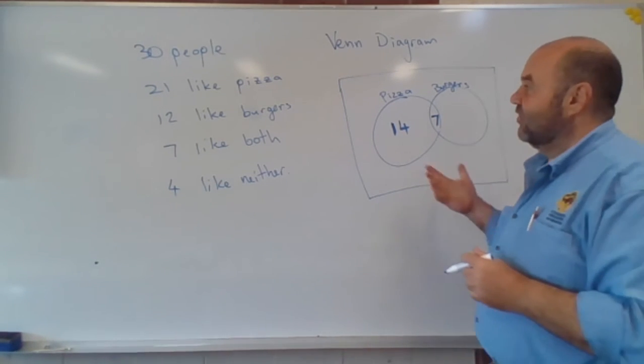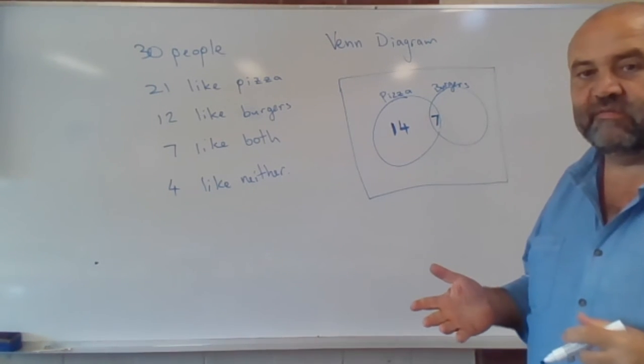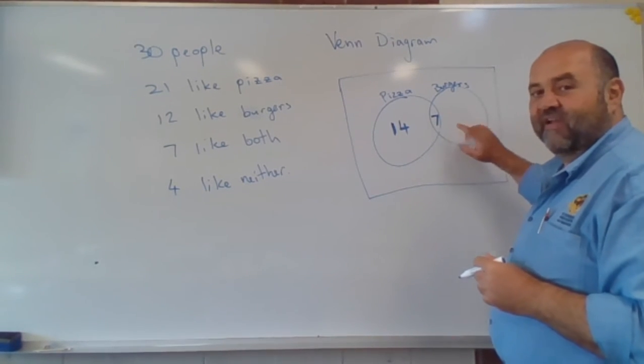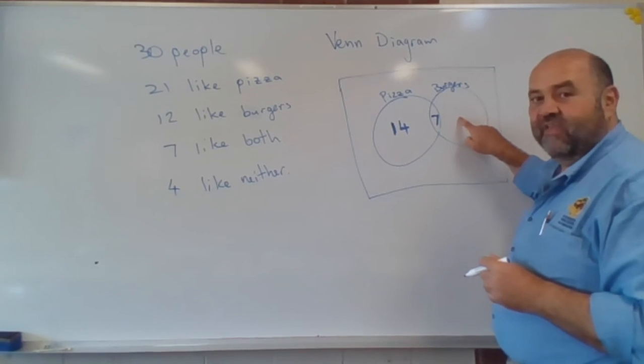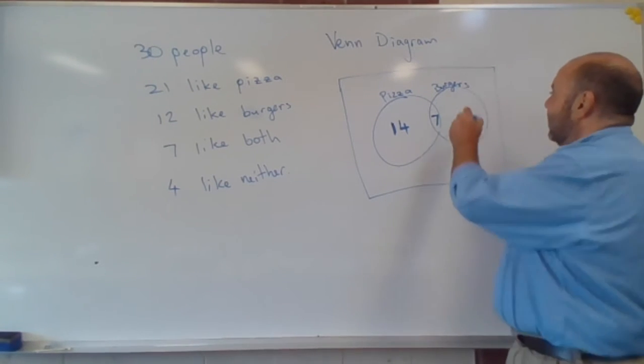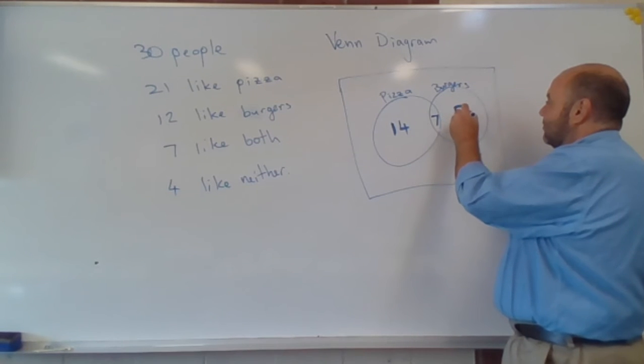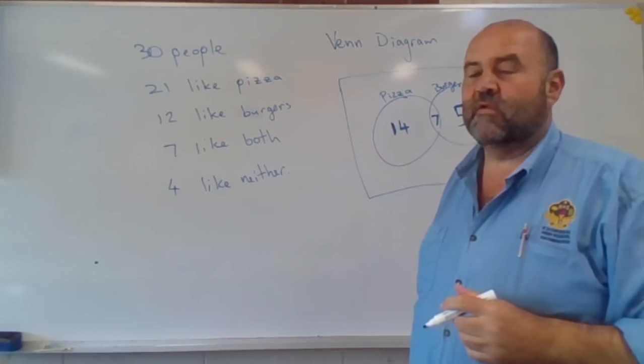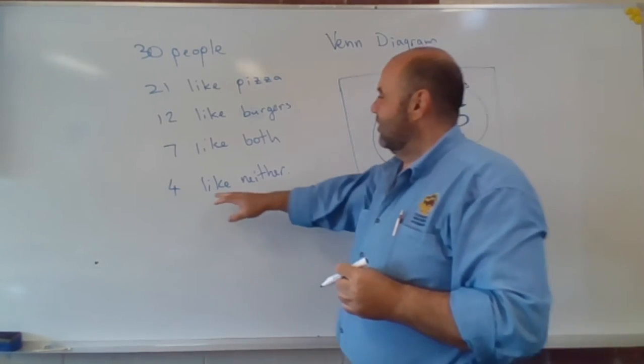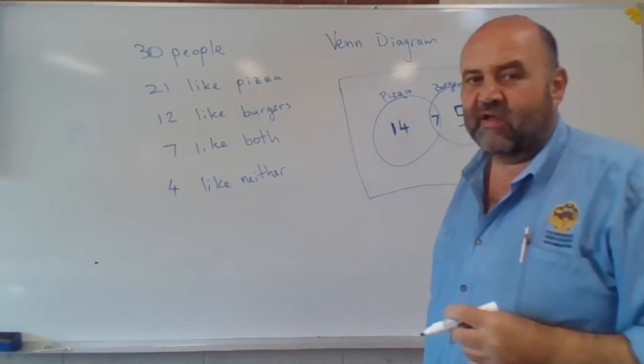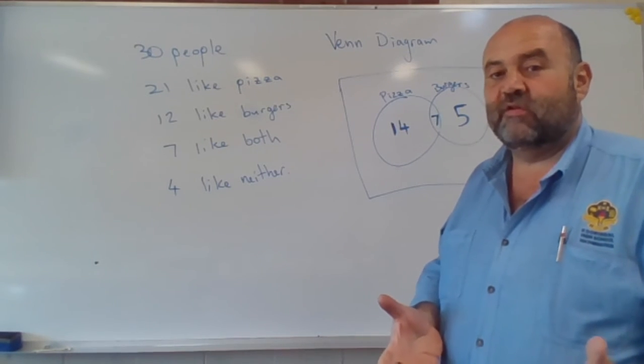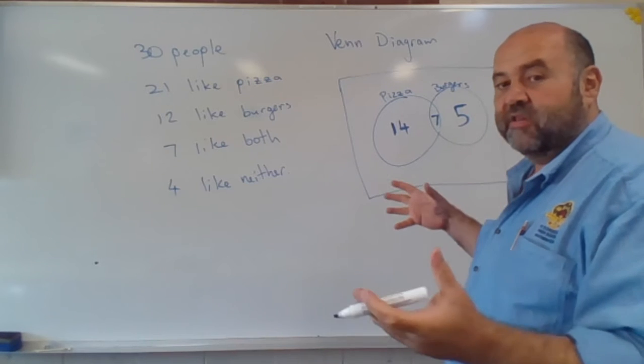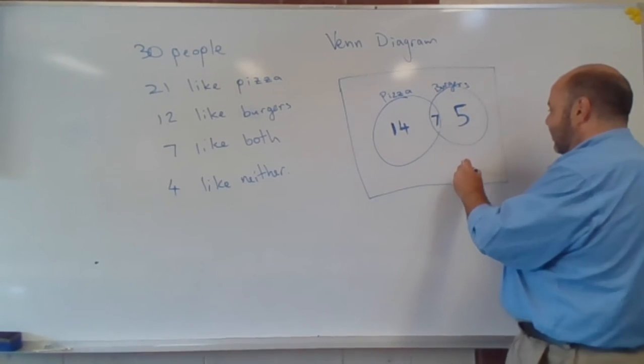Now, same deal for burgers. There are 12 people who like burgers and seven of them are here. Well, if there are 12 people altogether and seven are there, well, then over here in this part of the circle, there are five people. Well, there are four people who don't like either, so they can't go inside the circle. So those four people are outside the circle but within the sample space.